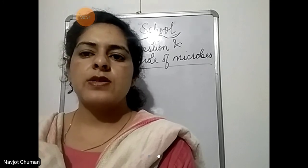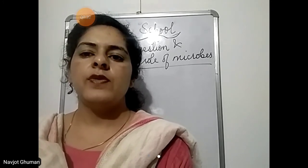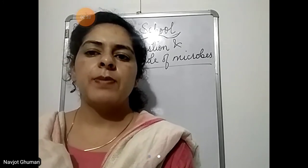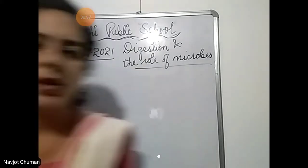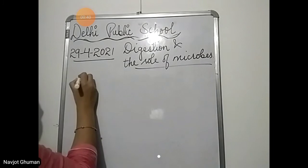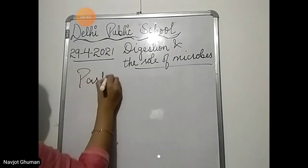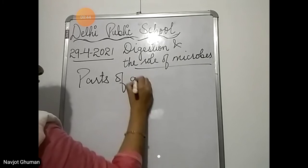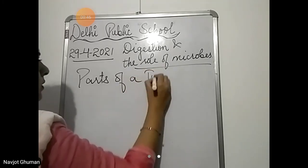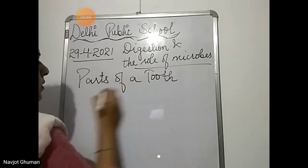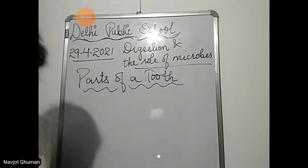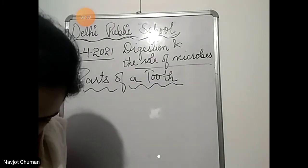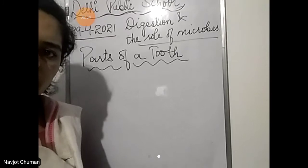Our next topic is Parts of a Tooth. Now we will read about the parts of a tooth — how many parts are there. Please open page number 23 of your books.